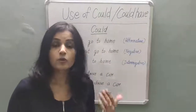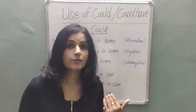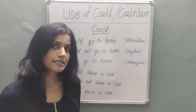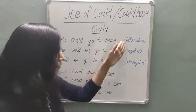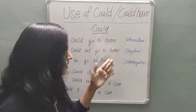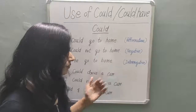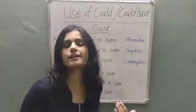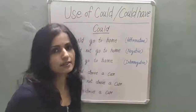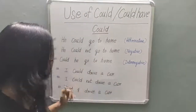When using a modal auxiliary verb, how do you create a sentence with 'could'? There are three forms: affirmative, negative, and interrogative. I will explain how to create sentences in all three forms.